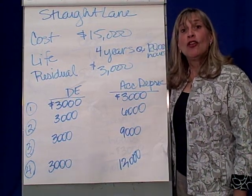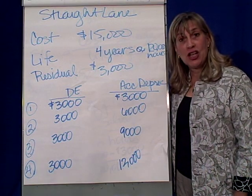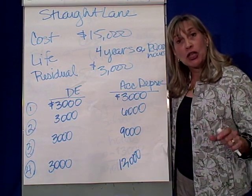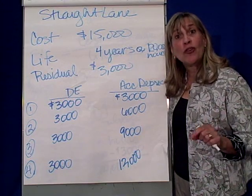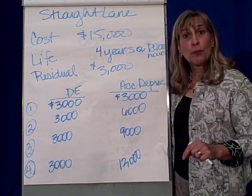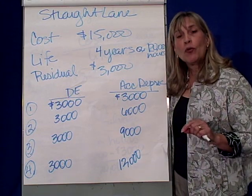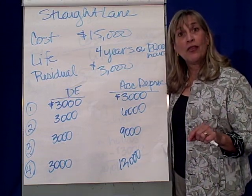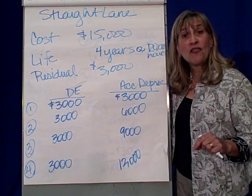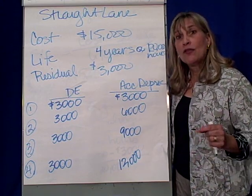Depreciation methods. So far we've talked about straight line depreciation, which measures the life or usage of the asset in terms of years. Now let's look at units of production, or the production method, where we measure the life of the long-lived asset in terms of hours or units of use.